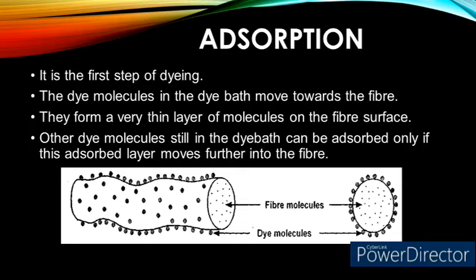Adsorption is the first step of dyeing. The dye molecules in the dye bath move towards the fiber, and those that are nearest to the fiber get adsorbed onto the fiber surface. They form a very thin layer of molecules on the fiber surface.